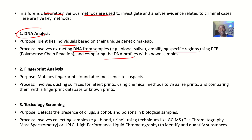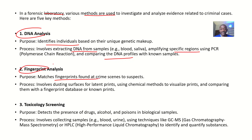You then compare the DNA profiles with known samples. The second method is fingerprint analysis. At a crime scene, for example if robbers came in and held on to surfaces, you can capture those fingerprints. In a database where citizens' fingerprints are stored, you can compare and find out who committed the crime. The purpose is to match fingerprints found at a crime scene to a suspect. The process involves dusting surfaces for latent prints, using chemical methods to visualize prints, and comparing them with a fingerprints database or known prints.